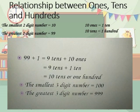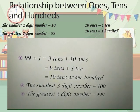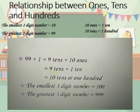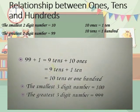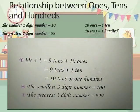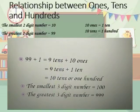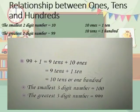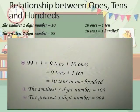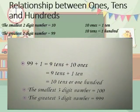In class 1 you have learned the numbers up to 99. You have also learned that the smallest two digit number is 10 and the greatest two digit number is 99. But what happens if we add 1 to 99?